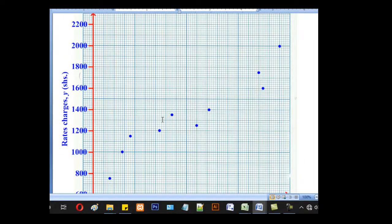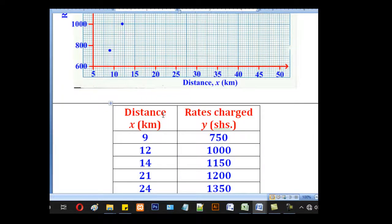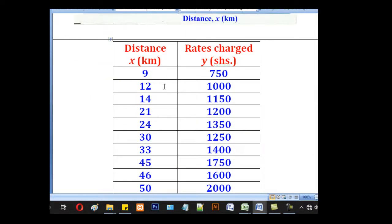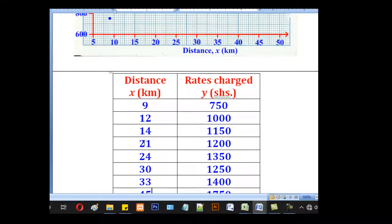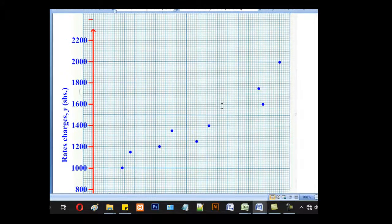There should be 10 points or 10 pairs, because these are also 10. So that is the scatter diagram.